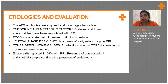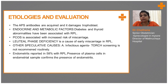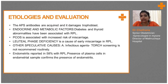The antiphospholipid antibodies are acquired and they damage the trophoblast — this is one of the causes for RPL. Endocrine and metabolic factors, that is diabetes and thyroid abnormalities, have been associated with RPL. PCOS is also associated with increased risk of miscarriage. And luteal phase deficiency, in which there is progesterone deficiency, is also one of the causes of RPL.